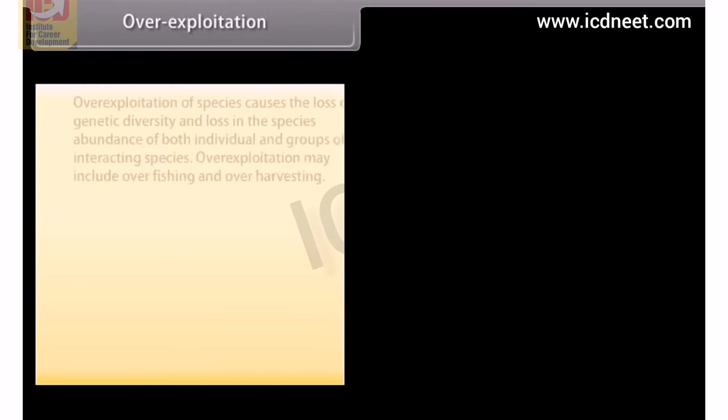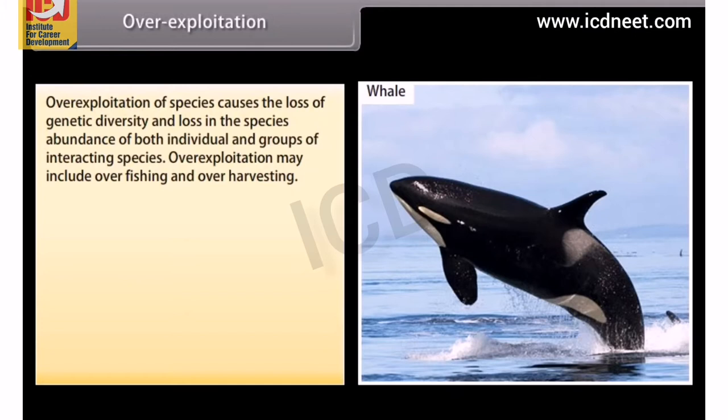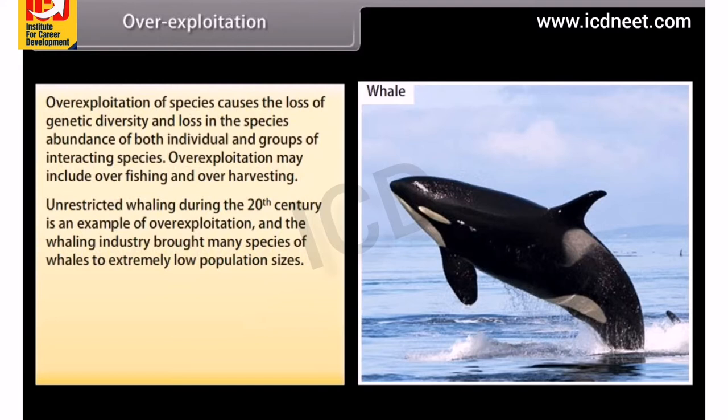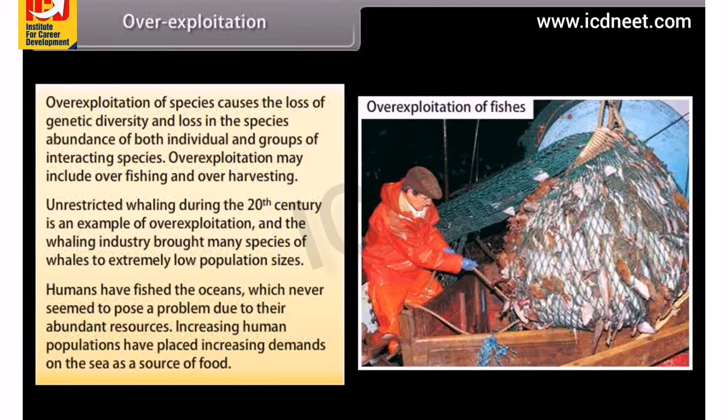Overexploitation of species causes the loss of genetic diversity and loss in the species' abundance of both individual and groups of interacting species. Overexploitation may include overfishing and overharvesting. Unrestricted whaling during the 20th century is an example of overexploitation, bringing many whale species to extremely low population sizes. Increasing human populations have placed increasing demands on the sea as a source of food.